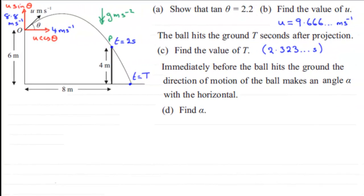Hi, now in the last part we're told that immediately before the ball hits the ground the direction of motion of the ball makes an angle of alpha with the horizontal and what we've got to do is find that angle alpha. So if you'd like to have a go at this and haven't done so already, just give you a moment to pause the video.